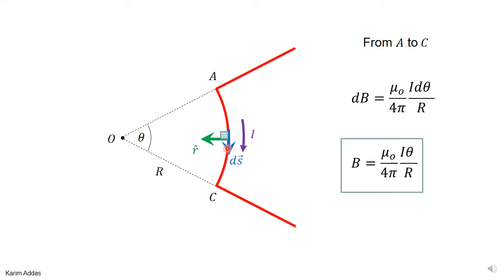To get the total magnetic field due to all elements from A to C, we integrate dB. Since μ₀, i, 4π, and r are all constants, we are simply integrating dθ, which gives theta. So the total magnetic field at the origin due to the arc is B = μ₀iθ/(4πr), where theta is the angle subtended between the first and last points of the arc.